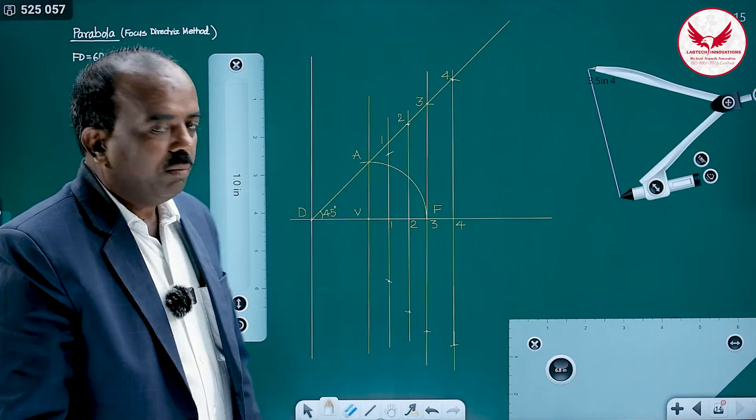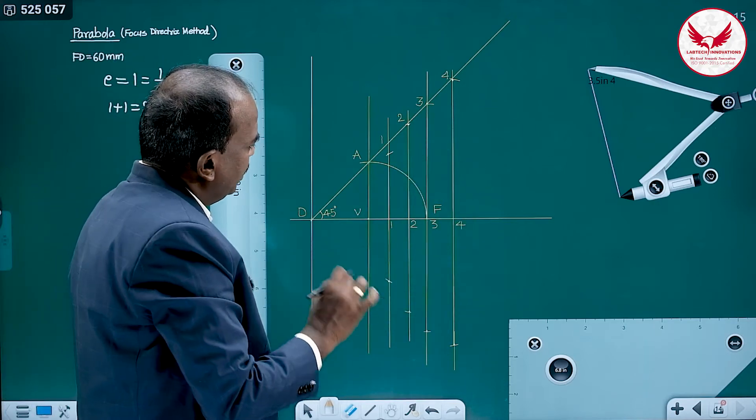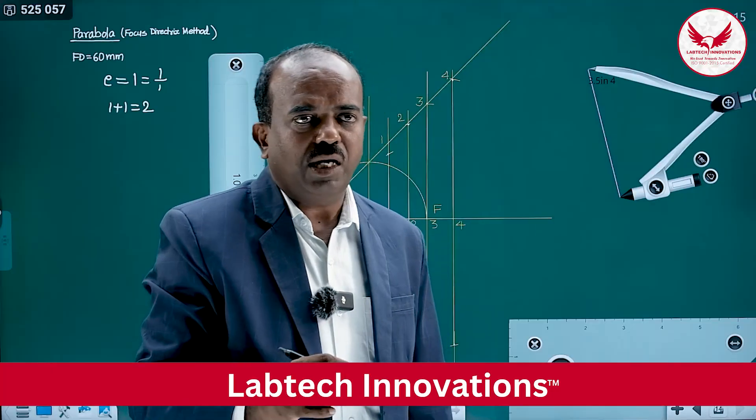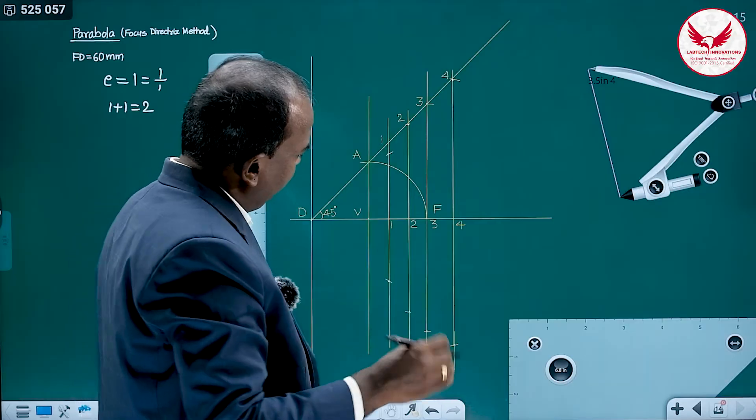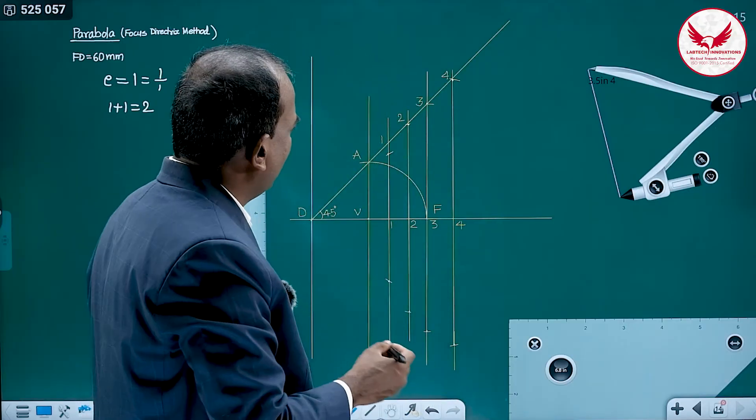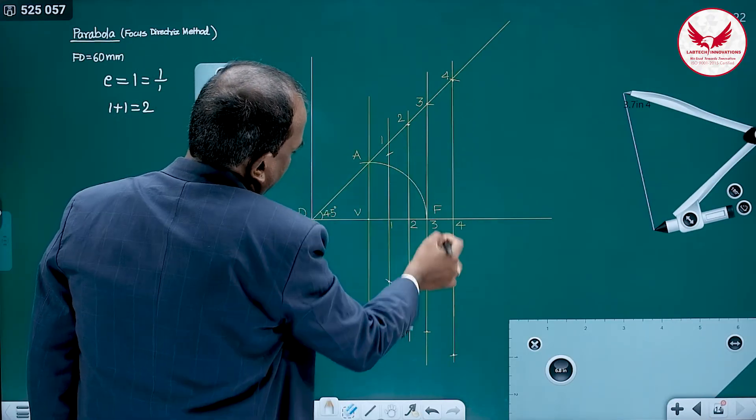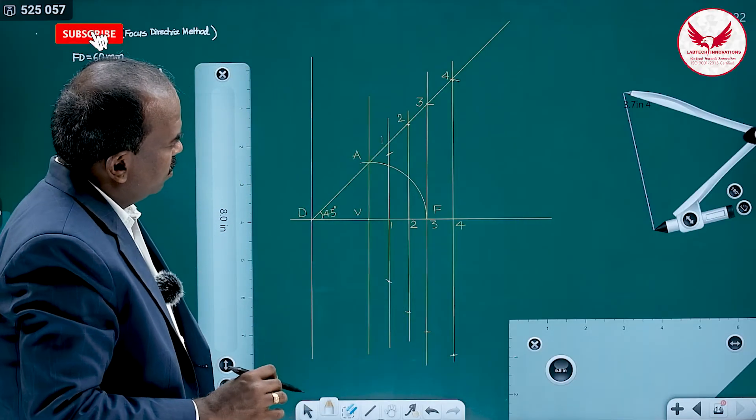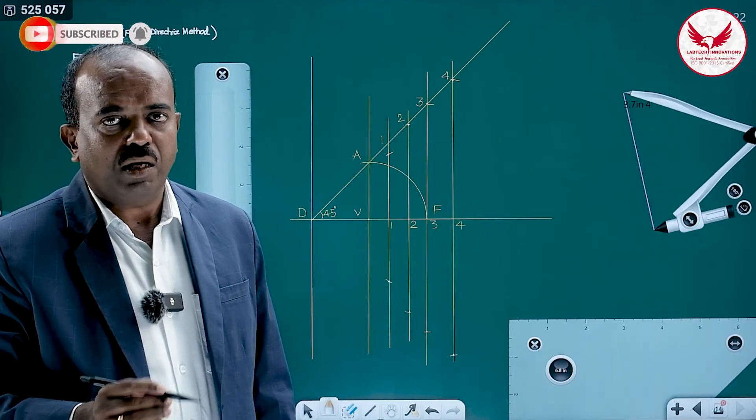These are the points on the parabola. Join all these points with a smooth curve. Observe it very carefully, it requires the concentration, draw with a free hand, it will be excellent one, it will improve your confidence. And if some mistake is there, eraser is there, you can erase and once again you can try. With these 4 vertical lines, we have got 8 points, 4 on upper side, 4 on lower side and vertex. Through these 9 points, we have to draw a smooth curve and it is going to be parabola.